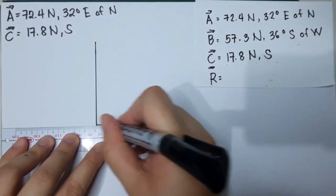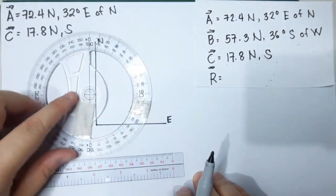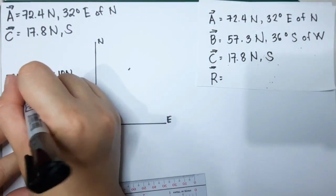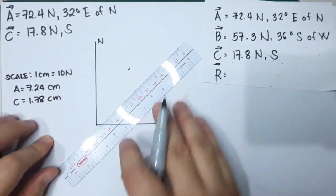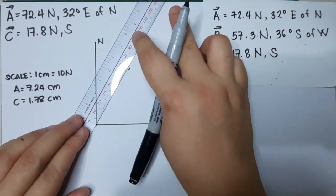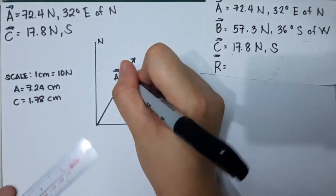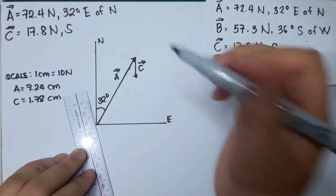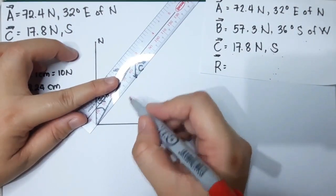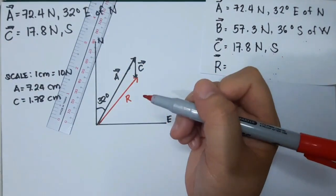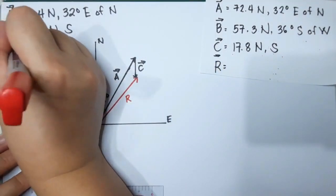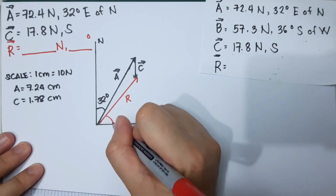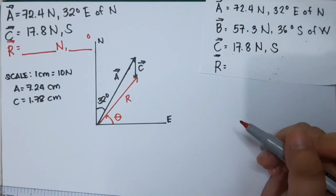What we need first is to draw the triangle of these two given vectors using the head-to-tail method. We will find the resultant vector R — what is the magnitude in newtons and what is the angle in degrees. We will use polar coordinate angles for the final answer.